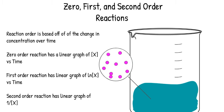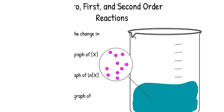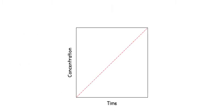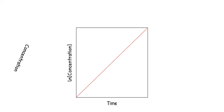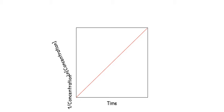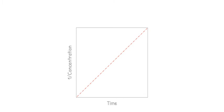This is a graph of a zero order reaction, which is linear for concentration versus time. This is a first order reaction, which is linear for natural log of concentration versus time. This is a second order reaction, which is linear for one over concentration versus time.